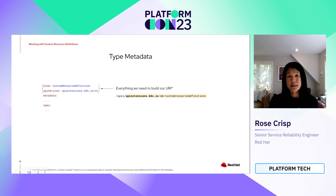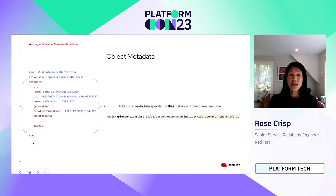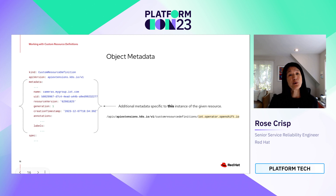Type metadata is where we tell Kubernetes we want to use custom resource definition to define our own custom resource. In the object metadata section, we specify the name of the CRD. If we name our CRD camera.mygroup.iot.com, we can use kubectl get CRD to retrieve it.